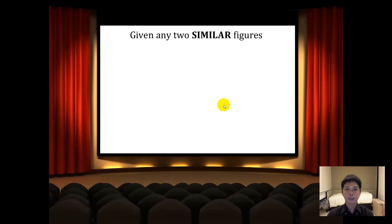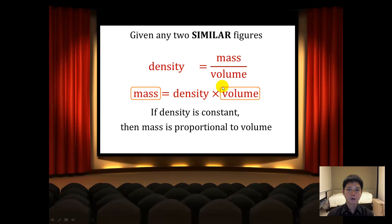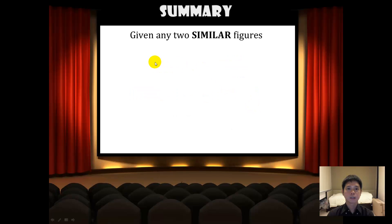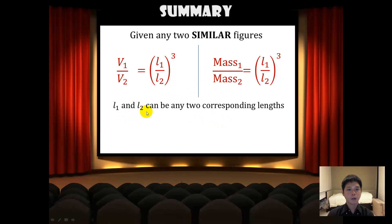For any two similar figures, density equals mass over volume, and mass equals density multiplied by volume. If density is constant, mass and volume are directly proportional. This implies that if V1 over V2 equals (L1 over L2)³, then likewise mass1 over mass2 also equals (L1 over L2)³. Because when density is constant for two similar figures, volume and mass are directly proportional, so the formula is the same for the ratio of volumes and the ratio of masses. L1 and L2 can be any two corresponding lengths.